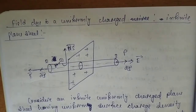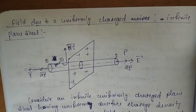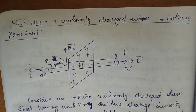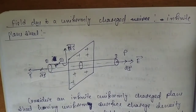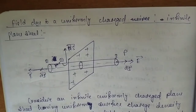The line charge density, surface charge density, and volume charge density are all constant. I consider the uniform charged infinite plane sheet. Plane sheet means a 2D surface. I consider the surface charge density, and the surface charge density is constant.